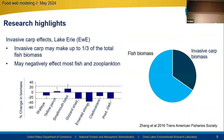Using the Ecopath with Ecosim framework, we modeled potential consequences to the Lake Erie food web if invasive carp — that is, bighead carp and silver carp — were to invade the lake. What we found was interesting: invasive carp could potentially make up to a third of the total fish biomass of the lake. In addition, they may negatively affect important food web groups such as zooplankton, prey fish, and some recreationally important fish. However, there could also be some winners, such as smallmouth bass.